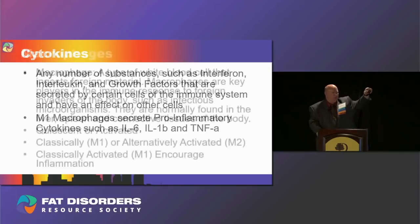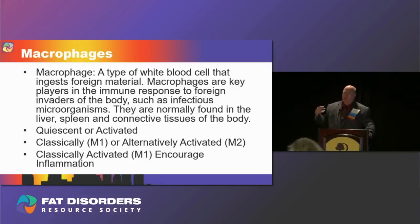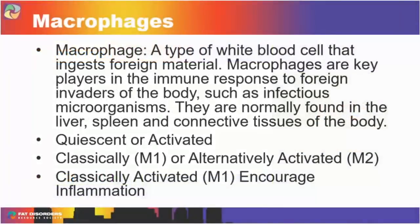Macrophages are a type of white blood cell that ingest foreign material — they've been referred to as the Pac-Man of the immune system. Macrophages play a role in the normally functioning immune system but also play a significant role in chronic inflammatory diseases. They can be found in the connective tissues of the body, which may be why some refer to Dercum's disease as a connective tissue disease.